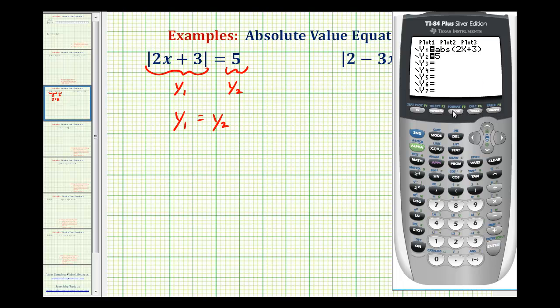So we'll go ahead and press zoom 6 for the standard window. There's the graph of the absolute value function, and there's the graph of the horizontal line. Notice how they intersect in two points. That's another reason why many absolute value equations have two solutions. So we want to determine the x-coordinates of these points of intersection, which will represent the two solutions.